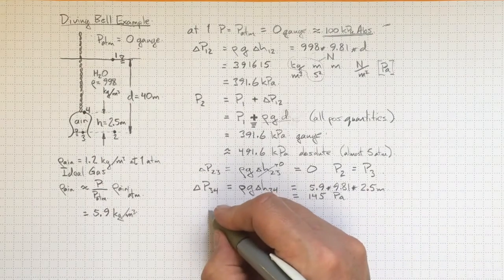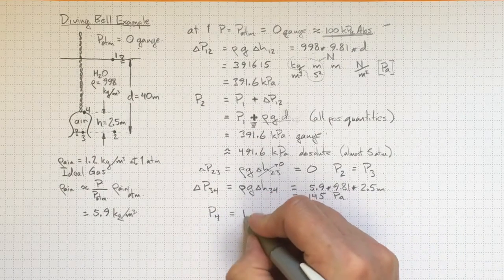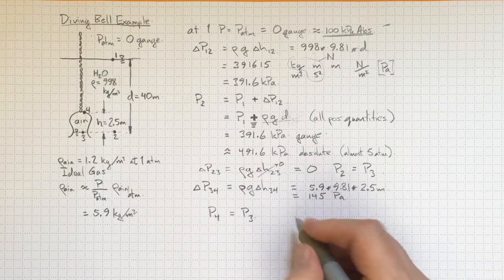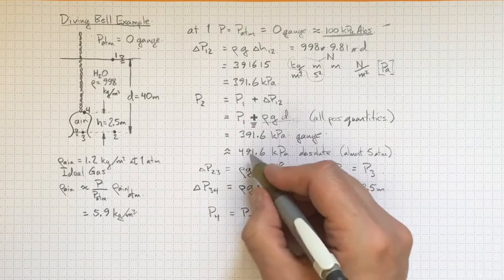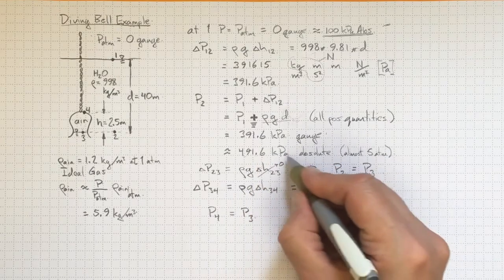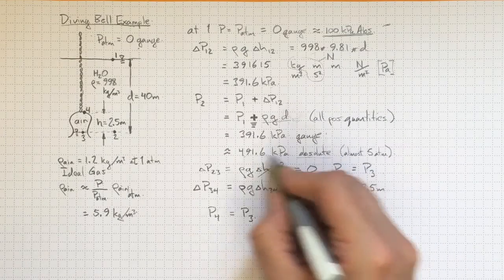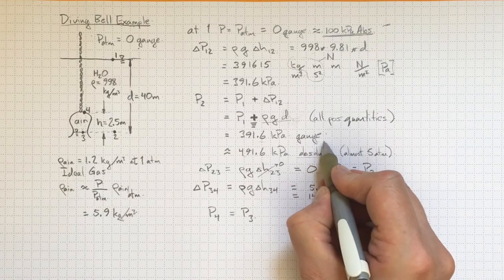So we can figure out what pressure at location 4 is. It'll be whatever the pressure at location 3 was, which is the same as what the pressure at location 2 was, which is the 491.6 kPa absolute or 391.6 kPa gauge.